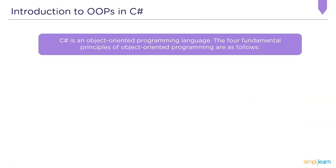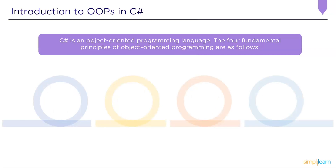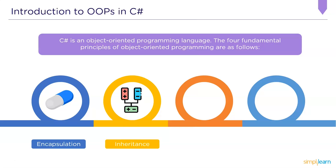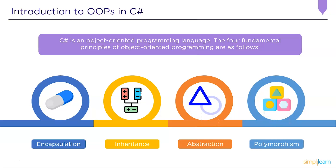Now let's move into the four fundamental principles of object-oriented programming in C#. Object-oriented programming in C# is categorized into four fundamental principles: the first being encapsulation, followed by inheritance, then abstraction, and finally polymorphism. Let us understand each one of these concepts in detail.